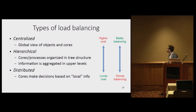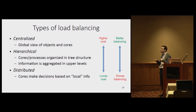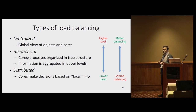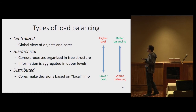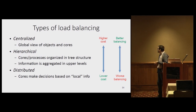The basic types of load balancing in Charm++: centralized load balancing gives you a global view of all objects and all cores, providing the best load balancing quality, but at higher cost since the algorithm has to process more objects. Hierarchical load balancing organizes cores in a tree structure and aggregates information, with some information loss but faster execution. Distributed load balancing is the most scalable. The choice depends on the scale of your job. We've tried to make improvements across all three types.